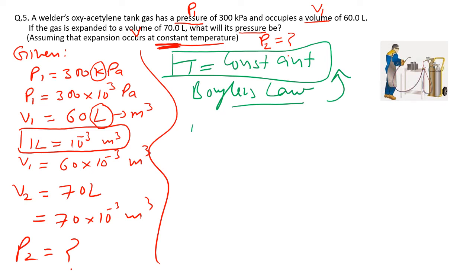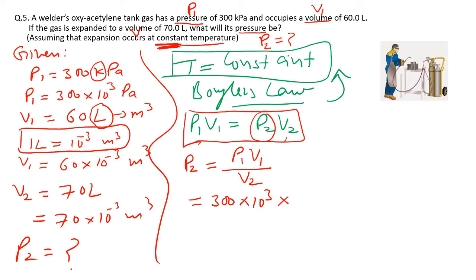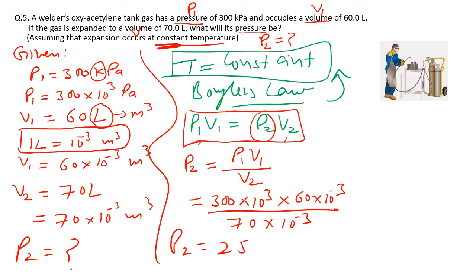Rearranging: P₂ = P₁V₁/V₂ = (300 × 10³ × 60 × 10⁻³) / (70 × 10⁻³). After calculation, P₂ = 257,142.8 Pa, which is approximately 257,143 Pa.